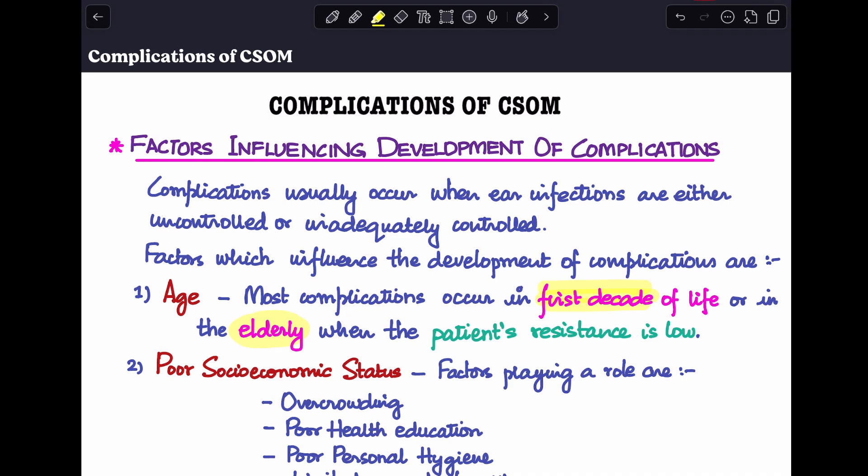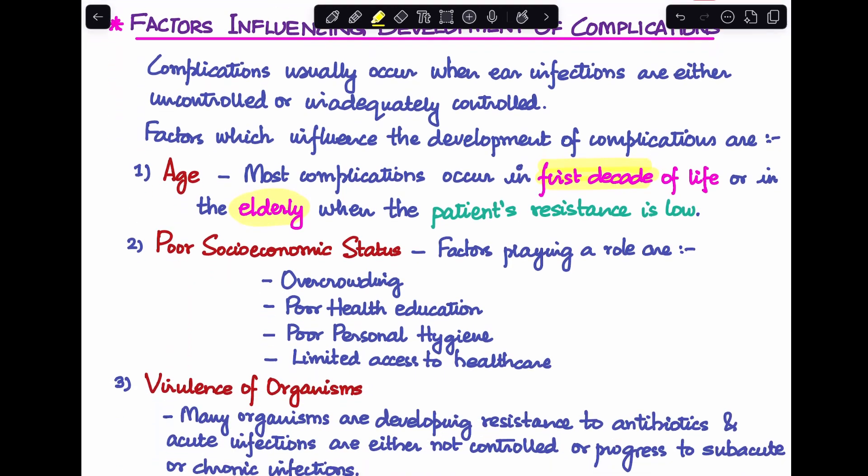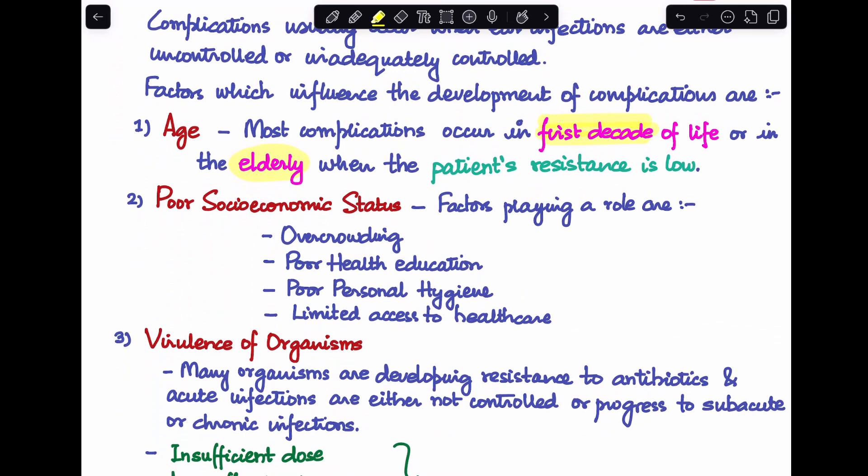And why is this? This is because in these age groups, the patient's resistance, the patient's immunity, is lower than other age groups. That is why they are more susceptible to developing complications. Second is a poor socioeconomic status. Now why is poor socioeconomic status a risk factor for developing complications? That is because of the presence of overcrowding, access to poor health education, poor personal hygiene, and very limited access to health care.